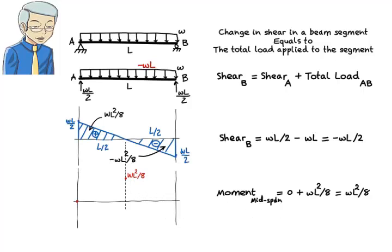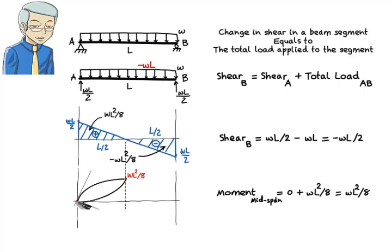Now that we have the moment values at the ends of the segment, we need to connect them using a curve indicating how moment changes within the segment. Similar to the shear diagram, the moment diagram curve is polynomial. The degree of this polynomial is one higher than that of the shear polynomial. Since the shear diagram is linear — the shear polynomial has a degree of 1 — then the moment diagram needs to be drawn using a polynomial of degree 2, a curve representing a quadratic equation. But such a curve can be drawn in two ways: either with a decreasing slope or with an increasing slope.